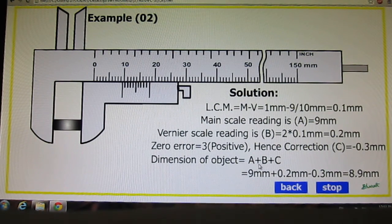Dimension of object is A+B+C, that is 9mm plus 0.2mm minus 0.3mm. Our ultimate answer is 8.9mm.